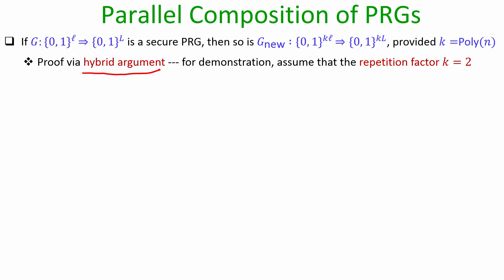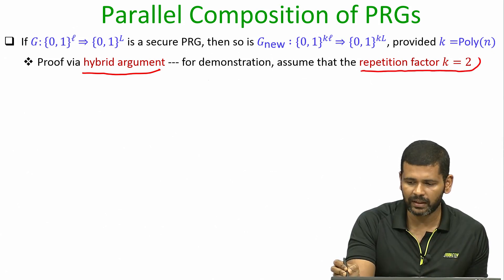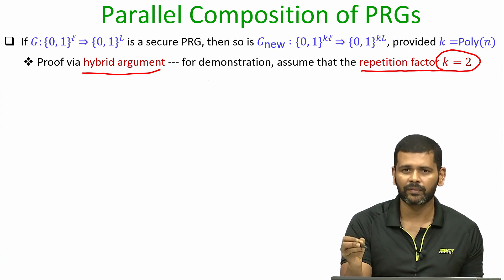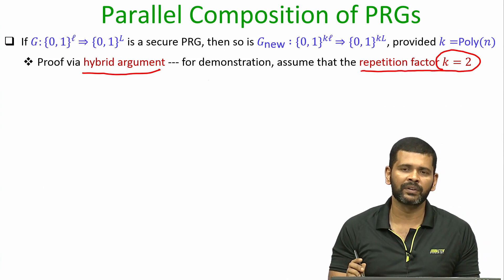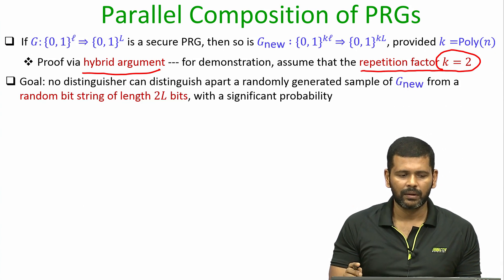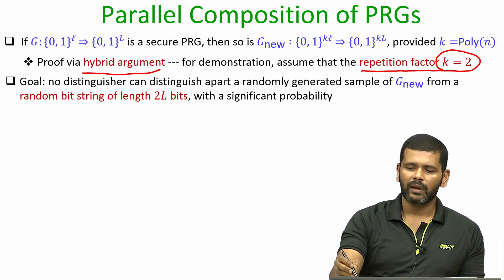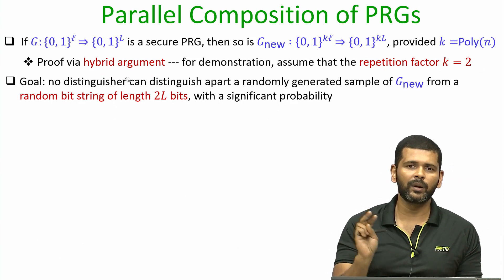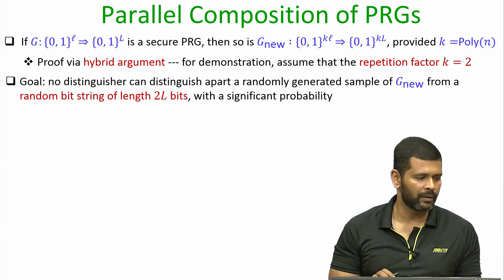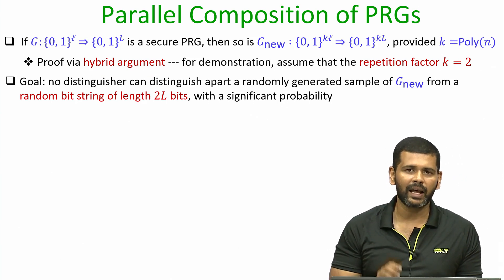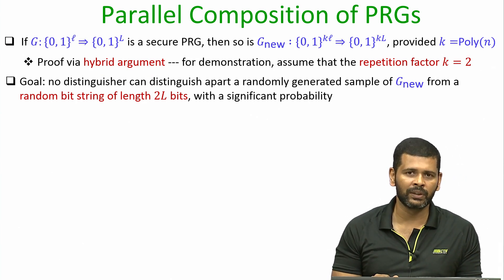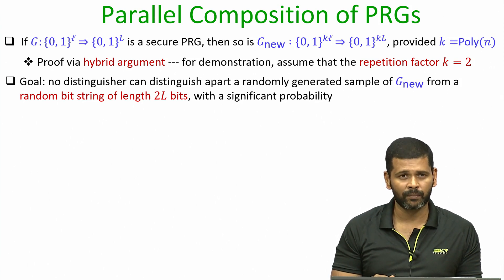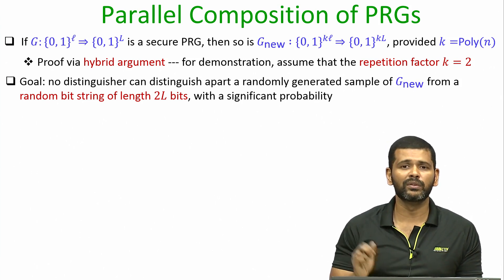For demonstrating the hybrid argument I will consider the repetition factor k equal to 2 for simplicity, and later we will see the generic case where k is any polynomial function of the security parameter. So with k equal to 2, algorithm G_new consists of two independent parallel copies of the existing algorithm G, and I want to prove that G_new is a pseudo random generator using the indistinguishability-based definition.